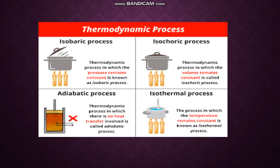These four processes can be represented on a diagram — isobaric, isochoric, adiabatic, and isothermal. You can see different variations of heating water in a vessel: isobaric is constant pressure, as in heating water with the lid open; isochoric is constant volume, as in a closed vessel; isothermal is in a completely open vessel maintaining constant temperature; and adiabatic uses a piston-cylinder arrangement where it is a closed cylinder with no heat transfer.